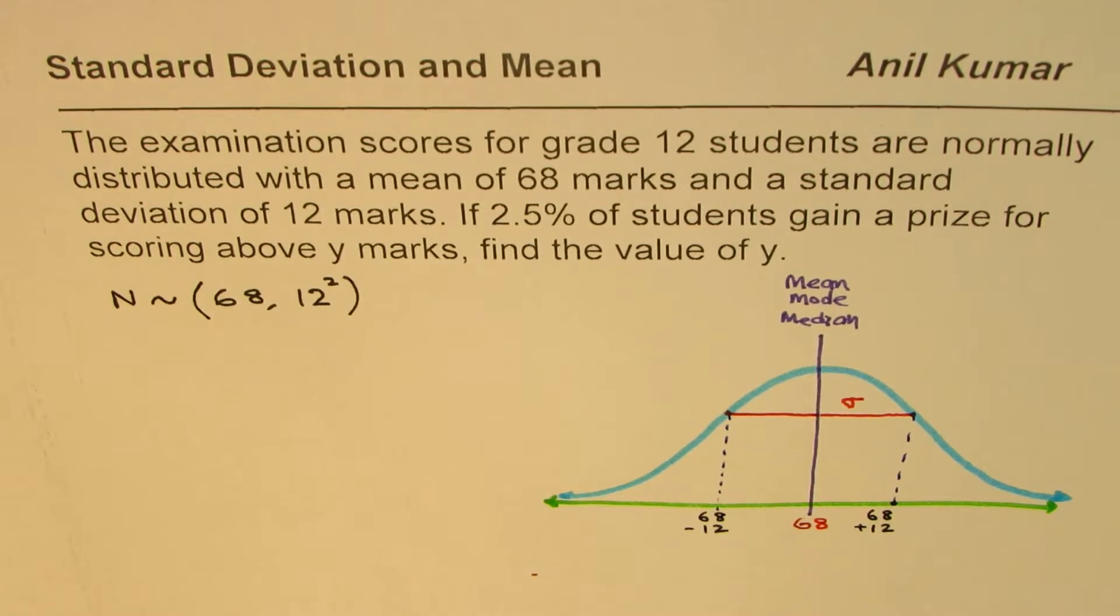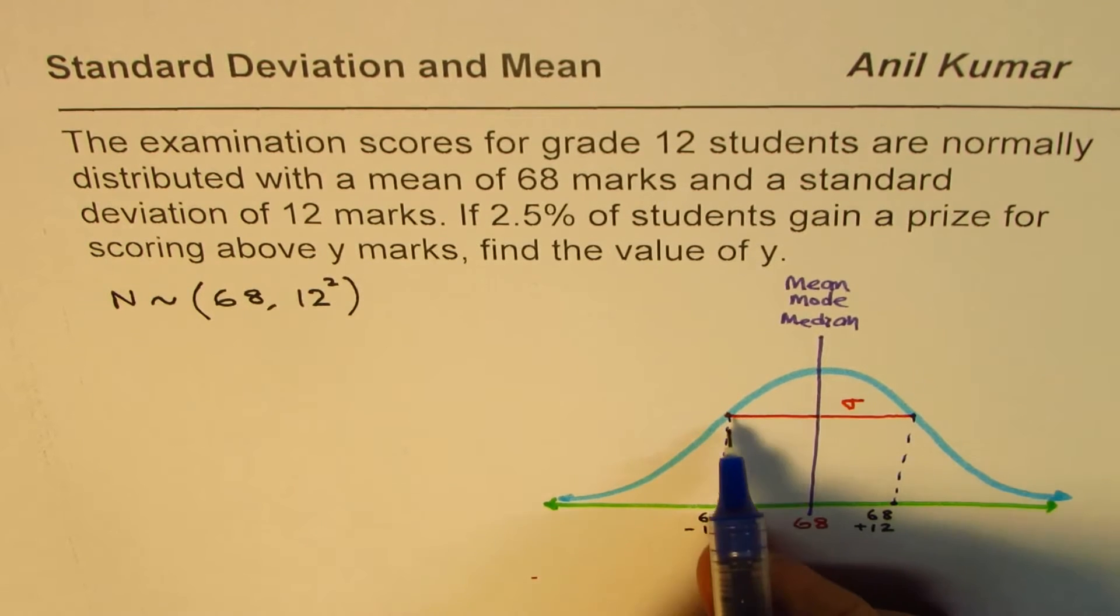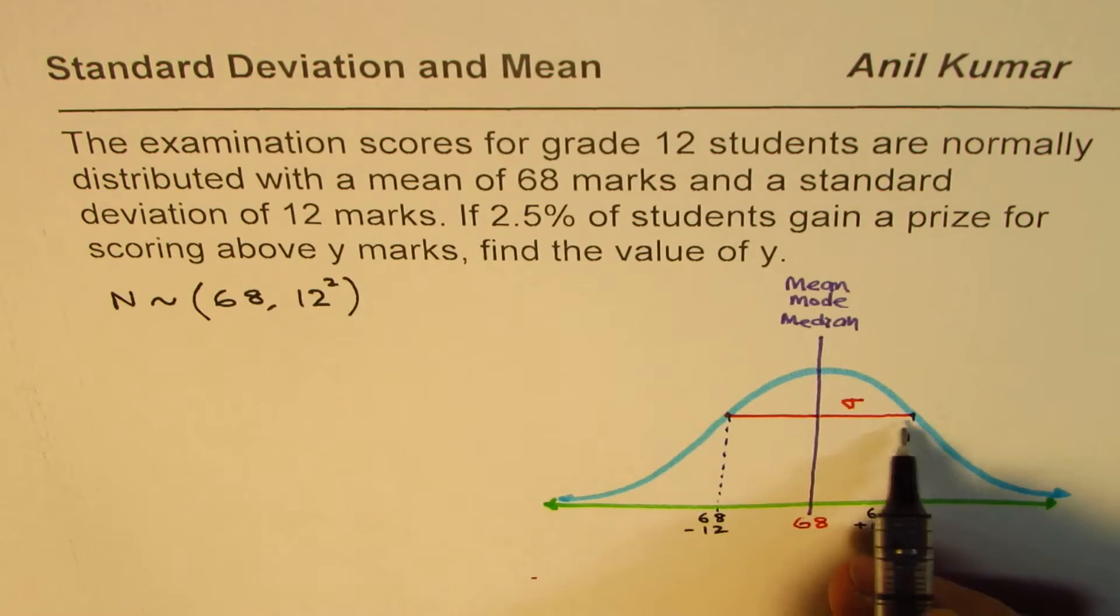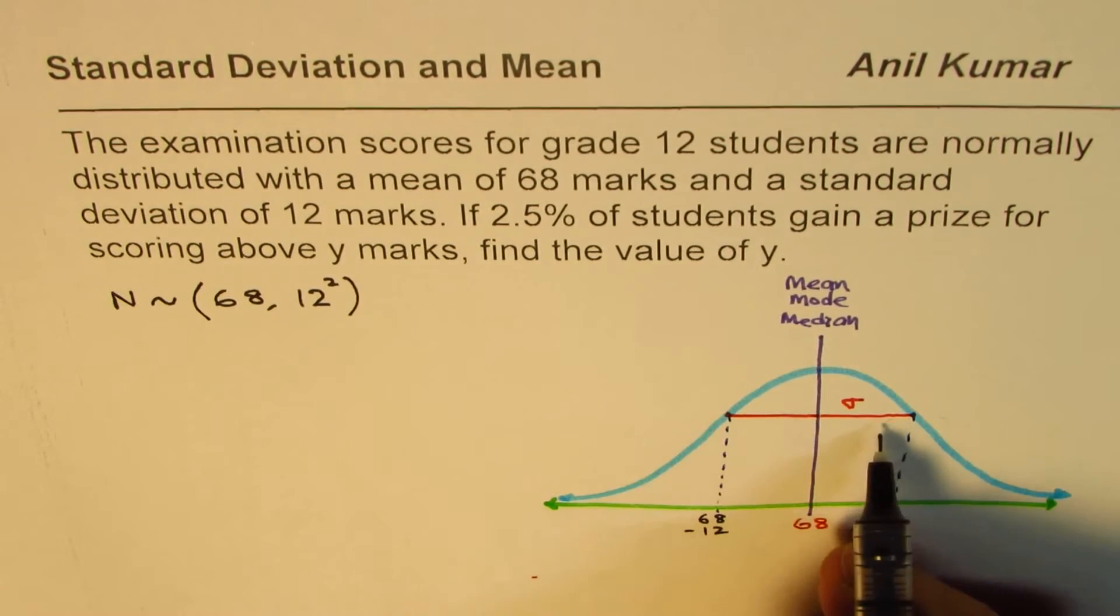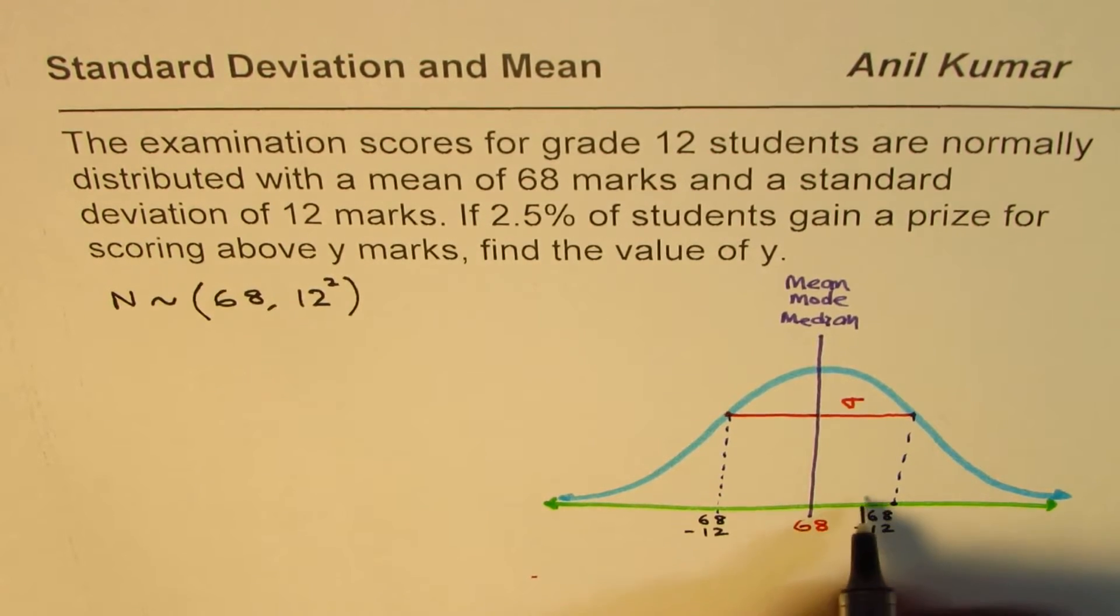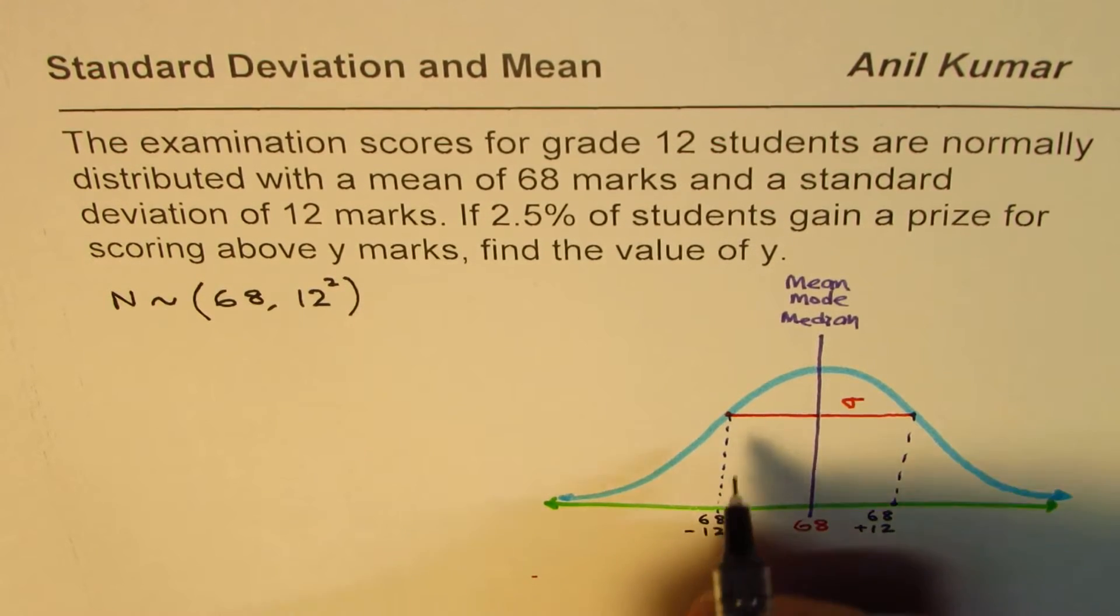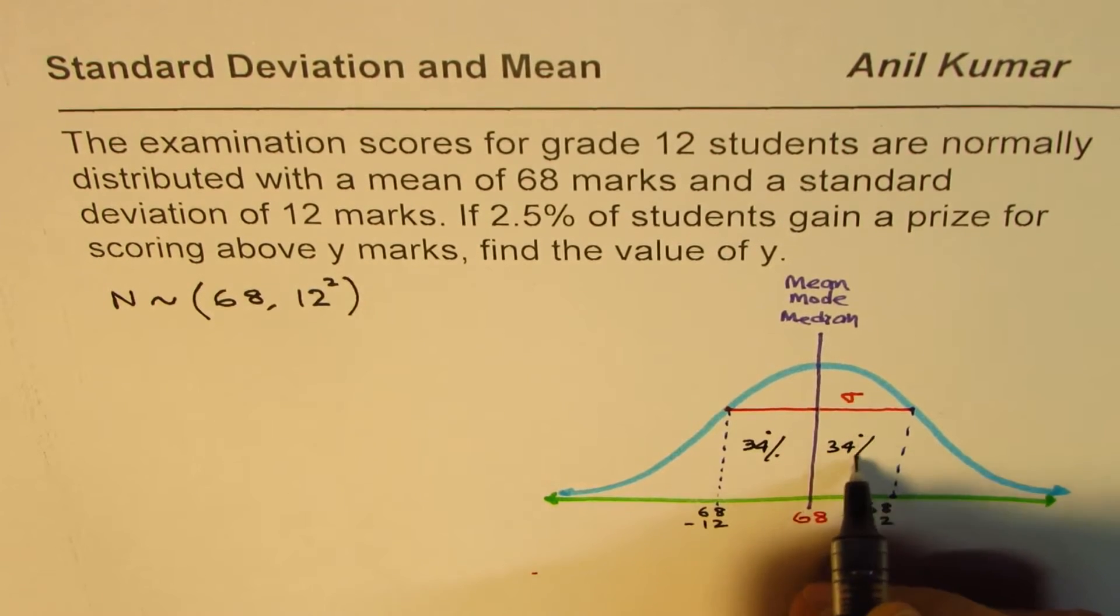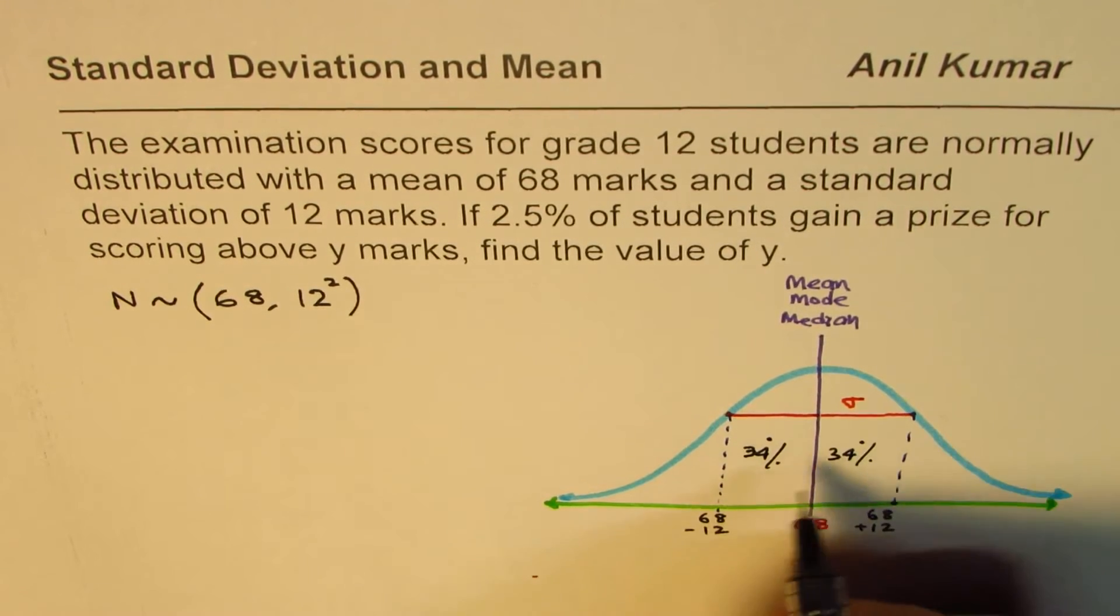This point will represent marks of 68 plus 12, and that portion on the left side will represent 68 minus 12. So one standard deviation away - in a normal graph this much of the portion represents 68% of data. As it is symmetric about this axis, the number of students who fall within one standard deviation away from the mean will be 68% of the students: 34% on this side and 34% on the other side.